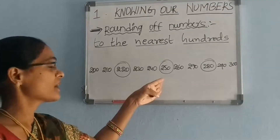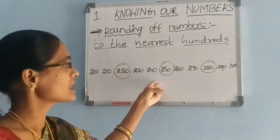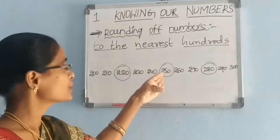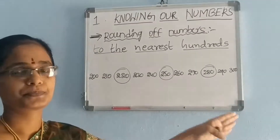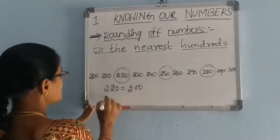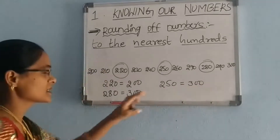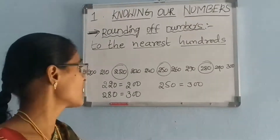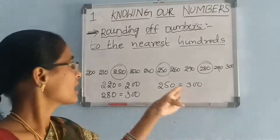What about rounding 250? 250 is at equal distance from 200 and 300. So by convention, 250 is rounded up to 300. So: 220 equals 200, 280 equals 300, 250 equals 300.